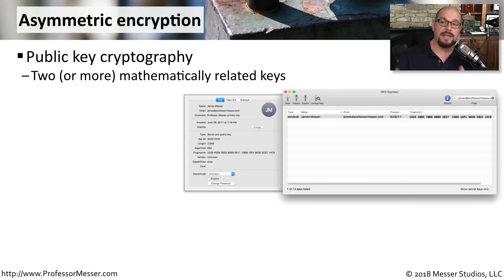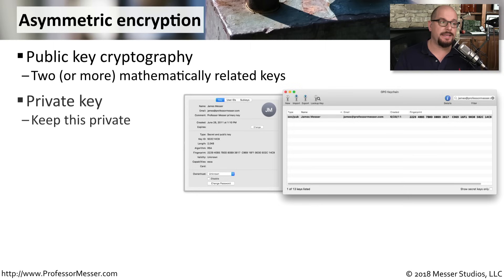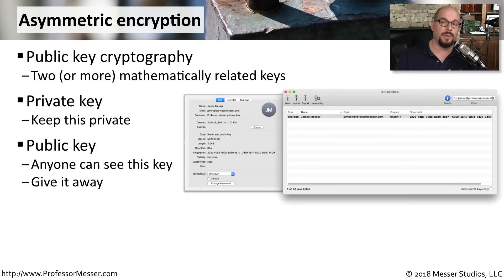You often hear asymmetric encryption referred to as public key cryptography. That's because there are usually two — or sometimes more — keys created that are mathematically related to each other. One of these keys is the private key, the key that you would keep private and personal to you. The other key is what we call the public key, because anyone can gain access to this key, and in fact you should give this key to everyone who might want to send you information over an encrypted channel.